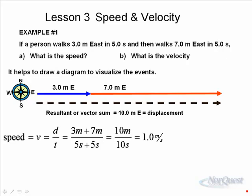When we calculate the speed, speed equals d over t. Distance over time is three plus seven meters over five plus five seconds, ten meters in ten seconds.